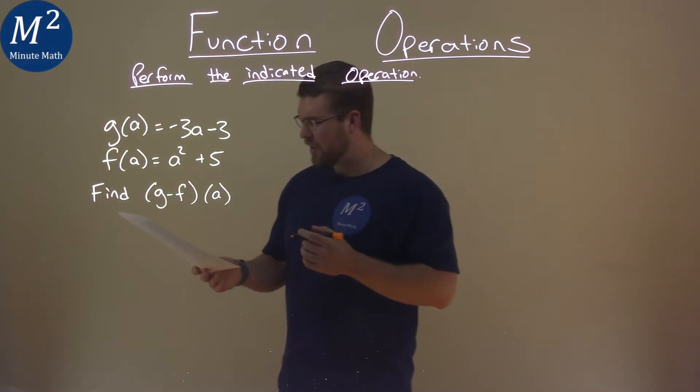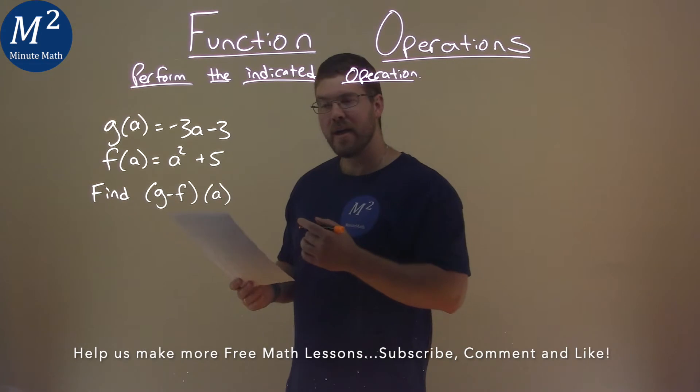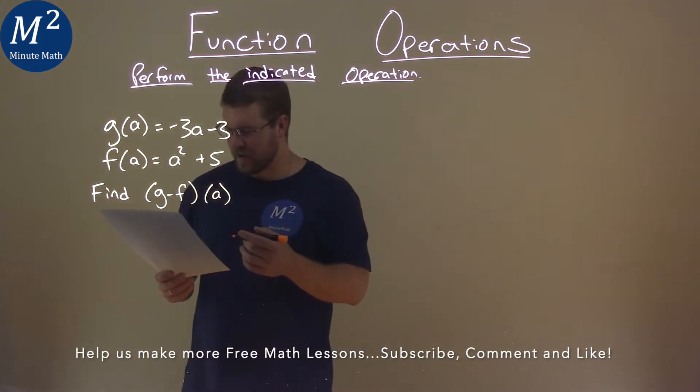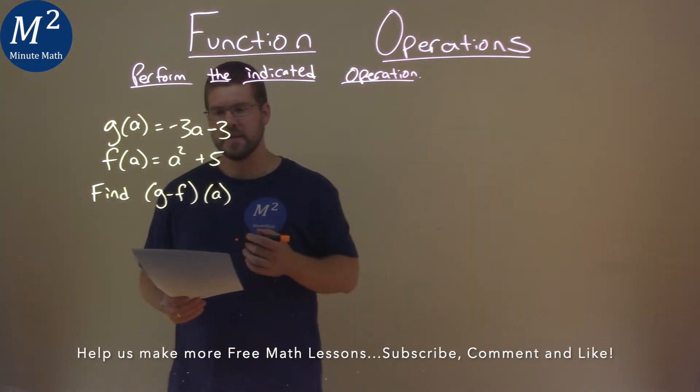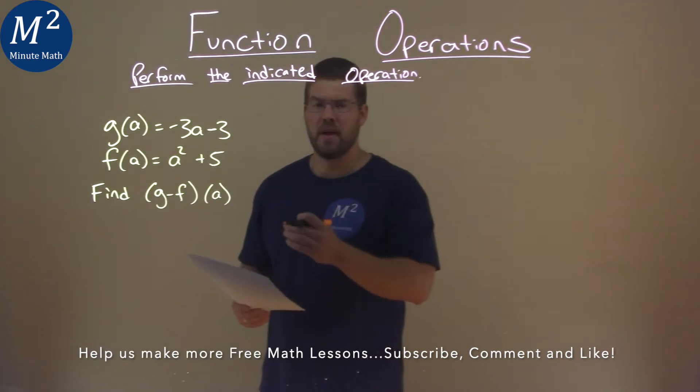We're given this problem right here. G of a is equal to negative 3a minus 3, and f of a is equal to a squared plus 5, and we need to find g minus f of a.